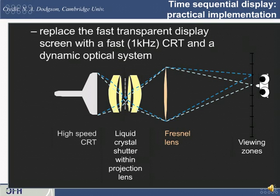So instantaneously only one of those viewing zones would have imagery that you could see. But when you turn it on, that shutter moves really fast so that you really can't tell it's a scanning system. It seems as if it's on all the time and you get a 3D image that you could see.